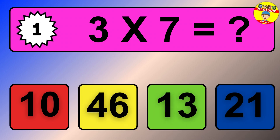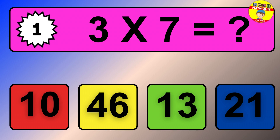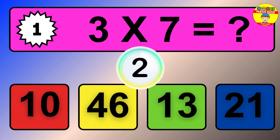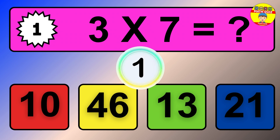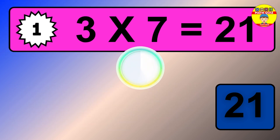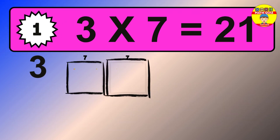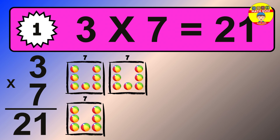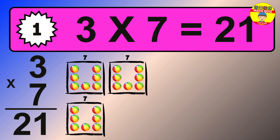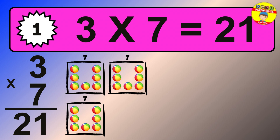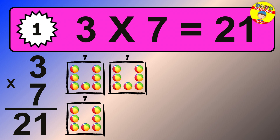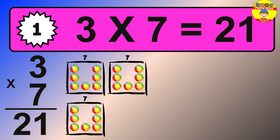Question 1. 3 times 7 equals what? The answer is 3 times 7 is 21. To calculate, we have 3 groups with 7 balls each one. So how many balls do we have? 21 balls.